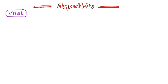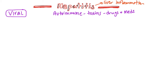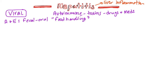Hepatitis can be viral, autoimmune, or caused by toxins, certain drugs, or medications. The name itself just means liver inflammation. Looking at viral causes, there's viral hepatitis A and E, which are fecal-oral transmission or from food handling. A few years back, there was a hepatitis A outbreak in some restaurants due to improper food handling of lettuce served to customers. Even though it was viral, there is no treatment for hepatitis A — it just kind of wanes out.